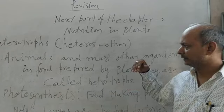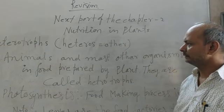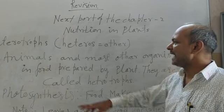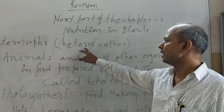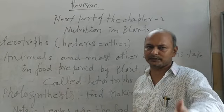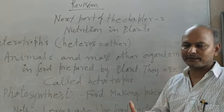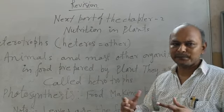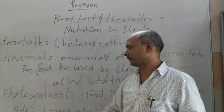Now, yesterday I explained autotrophs. Today I will explain heterotrophs. Hetero means others, and some plants and animals depend on others. For example, animals take food from plants, so animals are heterotrophs.